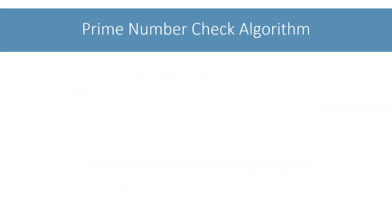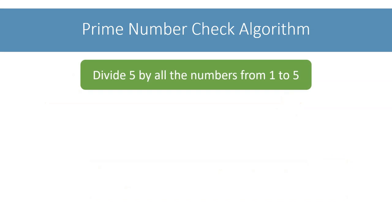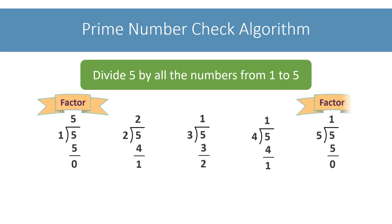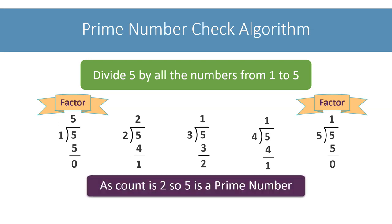Take the number 5. Try dividing 5 by all the numbers from 1 to 5 — divide by 1, then 2, then 3, then 4, and finally by 5 itself. Only 1 and 5 divide it evenly, so the count is 2, which means 5 is a prime number.